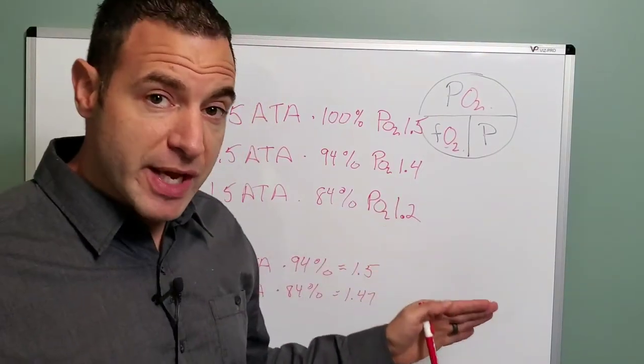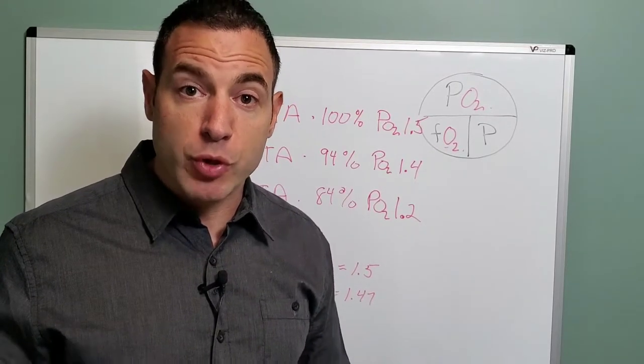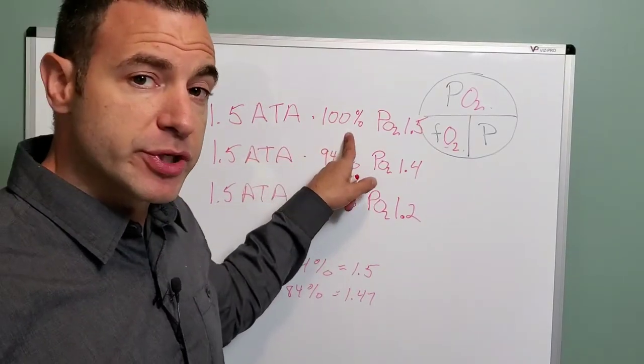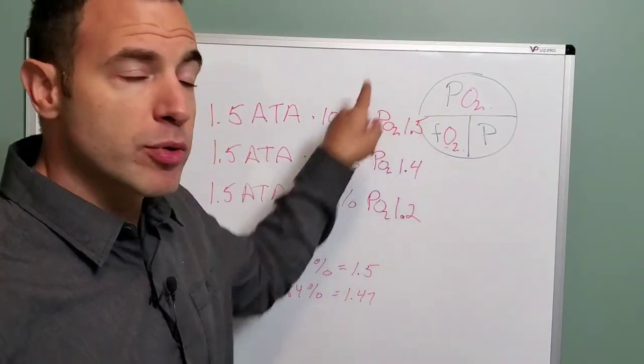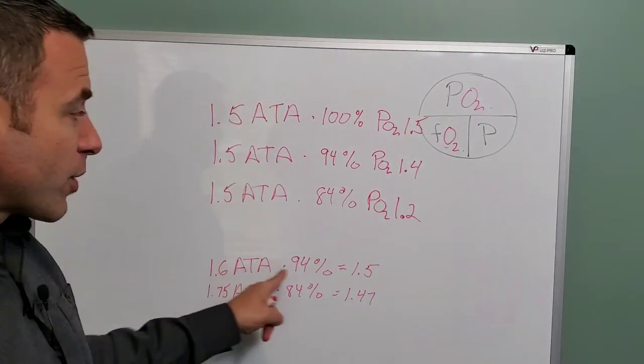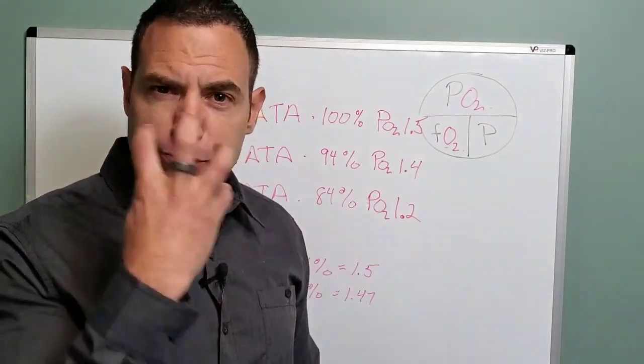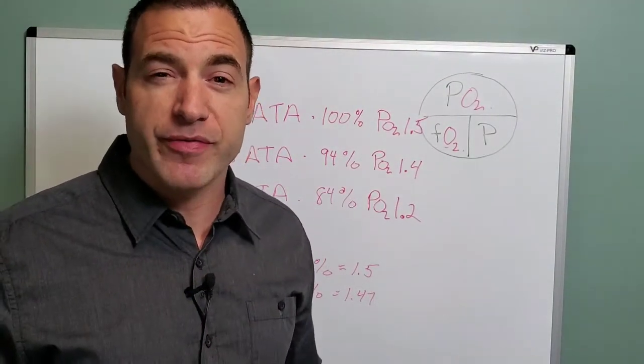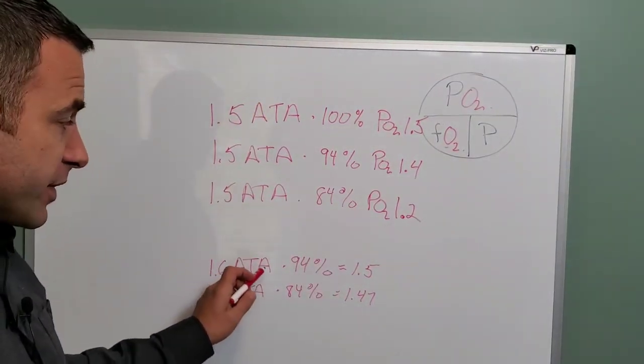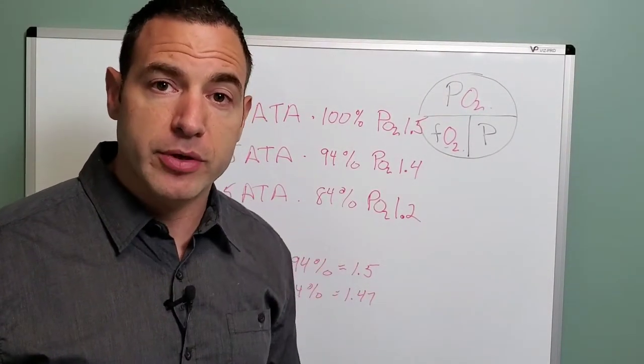So that being said, it doesn't mean you can't recreate the exact same dosage that you were shooting for in the first place. So if the goal was 1.5 atmospheres at 100% oxygen, and so the dosage we were looking for was a PO2 of 1.5, and let's say we had an oxygen concentrator, but it was perfectly fit, so we were getting 94% and we knew that the patient was getting 94%, well, by going to 1.6 atmospheres at 94%, we can create a 1.5 PO2.